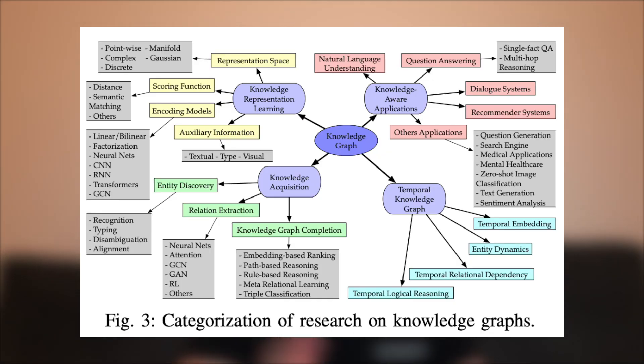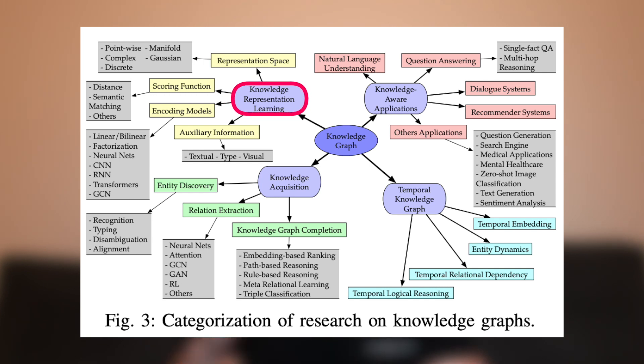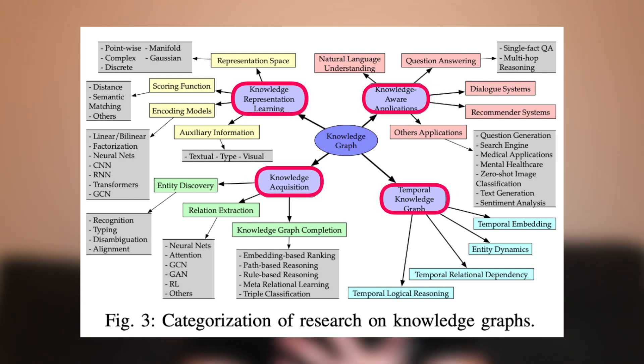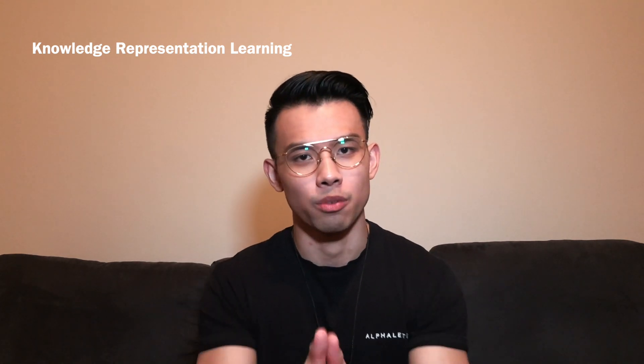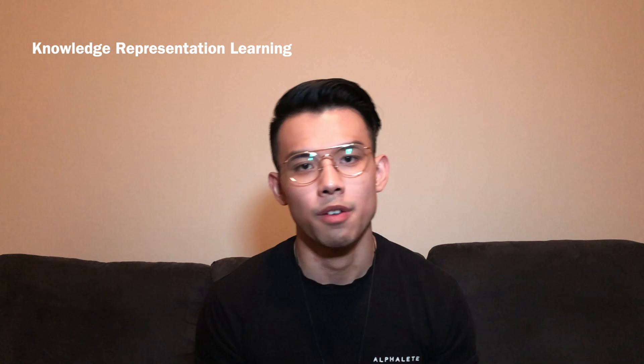We are now moving on to mapping out the current research landscape in knowledge graphs. There are four main research areas: knowledge representation learning, knowledge acquisition, temporal knowledge graphs, and knowledge-aware applications. Starting with knowledge representation learning — just like in natural language processing where you need to convert text into numerical forms before you can use or analyze it, knowledge graphs are no different. This is a very important research area because other research areas and applications are built on top of this foundation.